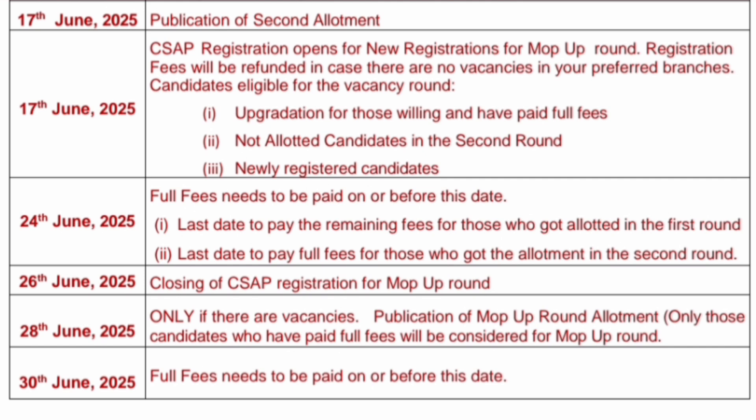24th June is the date by which you have to pay the full fees — this is the last date for those who got seats in both the first and second rounds. By 24th June, all students from round 1 and round 2 should pay the complete fees. 26th June is the closing of registration for the mop-up round, and 28th June is when the mop-up round allotment results are published. 30th June is the last day for mop-up round allotted candidates to pay the full fees — only two days are given.